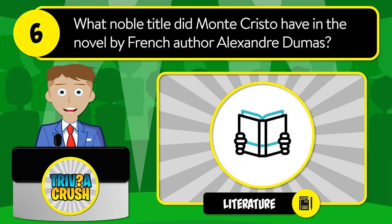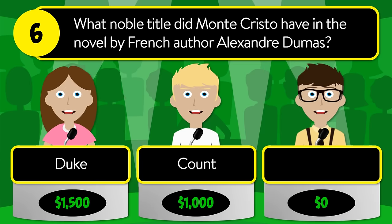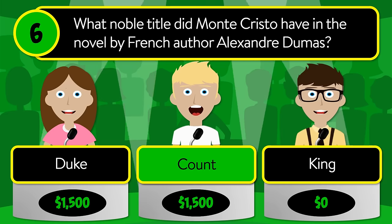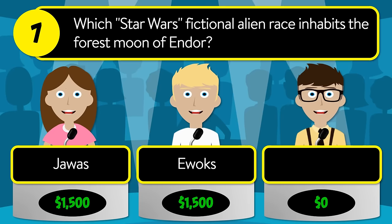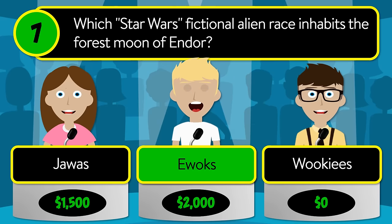Question number six: what noble title did Monte Cristo have in the novel by French author Alexandre Dumas? Was it Duke, Count, or King? The correct answer is Count. Question number seven: which Star Wars fictional alien race inhabits the forest moon of Endor? Is it Jawas, Ewoks, or Wookiees? The correct answer is Ewoks.